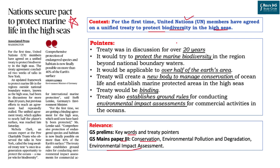Important pointers from the article: the treaty was in discussion for almost 20 years. Although the official name has not yet been decided, major proponents are calling it the High Sea Treaty. It will protect marine biodiversity, both flora and fauna, beyond national boundaries. It will be applicable to over half of Earth's surface. The treaty will create a new body — not UNCLOS or the International Seabed Authority — a separate organization to manage the conservation of marine biodiversity.